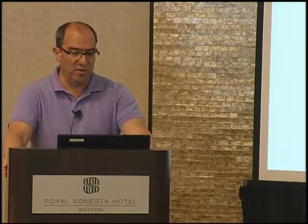Let me mention the challenges in estimating demand. Even in static demand, the key issue was the too-many-products or too-many-parameters problem. The way we solved it was to project products onto a characteristic space — from J products, maybe 100, down to K characteristics, maybe 5 to 10. Usually the challenge is to find enough meaningful characteristics, not the other way around.